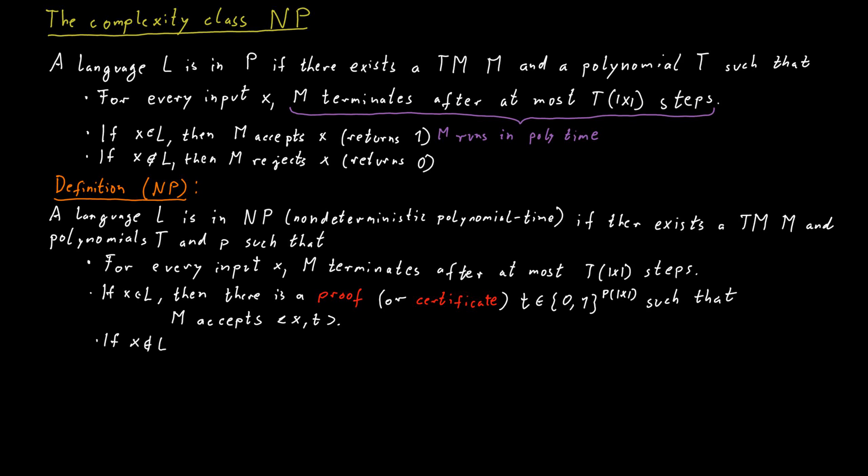If X is not in the language, then for any string T, M rejects X and T.